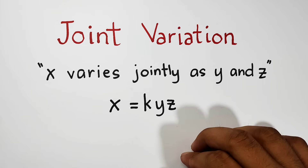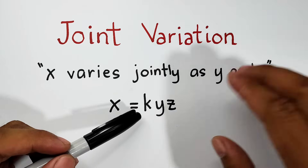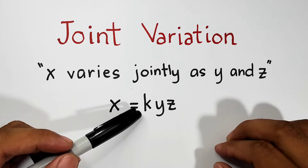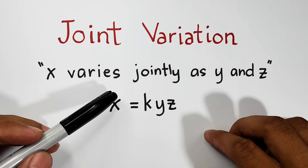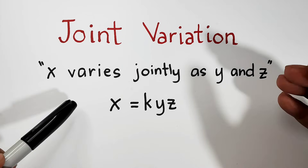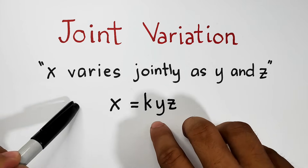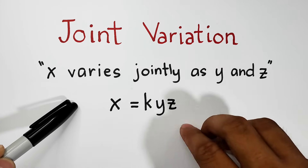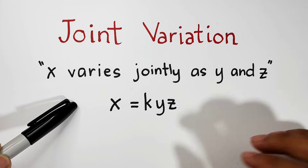After the direct and inverse, this will be the third type of variation na kailangan natin pag-aralan. Joint variation is an extension of direct variation because we will encounter here three or more quantities that varies directly.